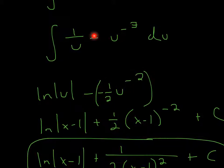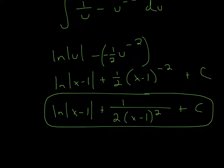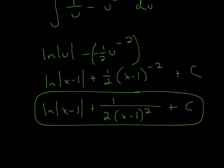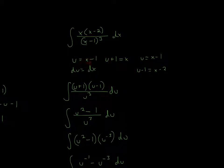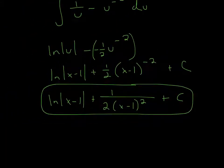Remember the subtraction here — this is independent of the actual integration. So it's the minus sign, then the integration: u with exponent raised by 1 gives negative 2, and 1 over the new exponent is negative 2. Then remember to plug in the original u, and these two negatives cancel to make a positive. So we plug in x minus 1 for u, giving us positive 1 half times (x minus 1) to the negative 2.